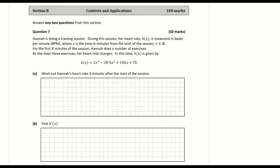Question 7a: work out Hannah's heart rate 4 minutes after the start of the session. We're given the function h of x, and I'm subbing in 4 for x, where x stands for the time, and that will give me the heart rate after 4 minutes. So I'm basically solving for h of 4 here.